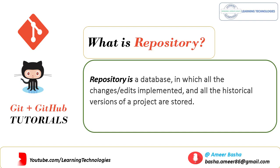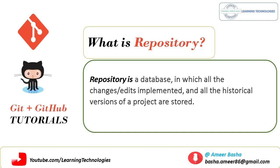Version control systems are associated with two basic components: one is repository, another one is working copy. Now we'll talk about the repository. A repository is a database in which all the changes or edits implemented and all the historical versions of a project are stored.